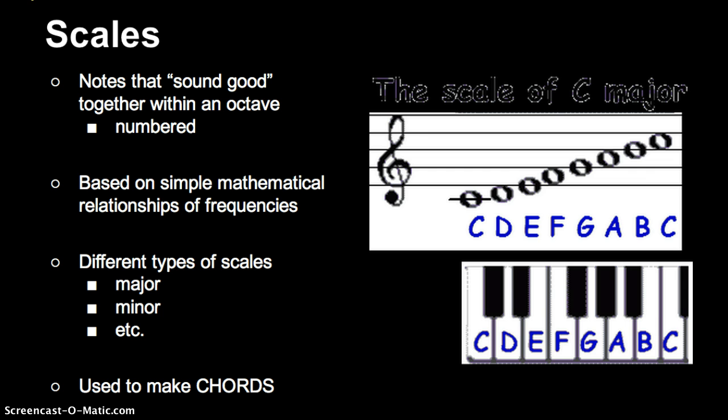And the C major scale is just C, D, E, F, G, A, B, C. So it goes from C to C. And the notes in between are just called D, E, F, G, A, B, C.